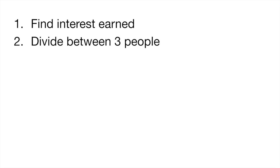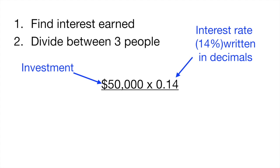In this problem what you have to do is find out two items. The first thing is to find the interest that they earned and second you have to divide that interest between the three people who invested. So we said that we have an investment of $50,000. So you would multiply that by 0.14. The reason you do this is because there's an interest rate of 14 percent. Okay so if we write that in decimals it would be 0.14 and that would give you the interest that was earned. And then you would divide that number by three.